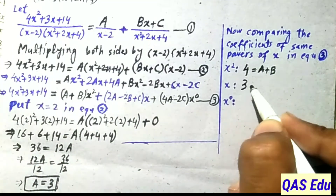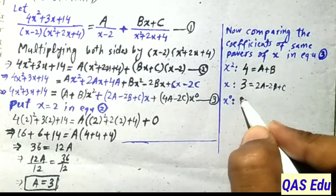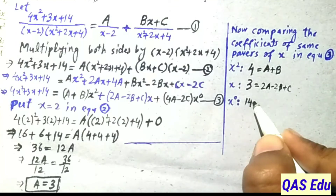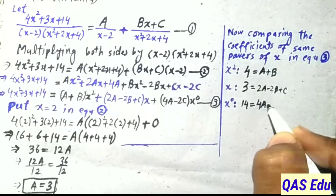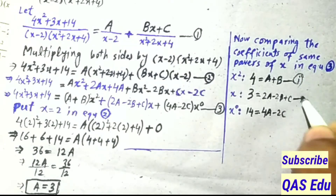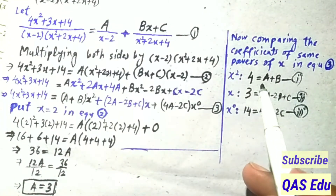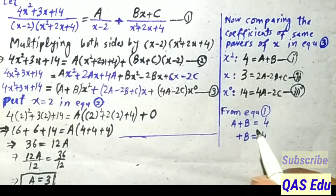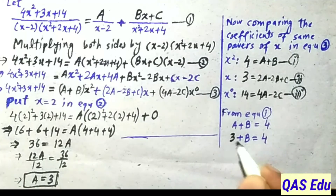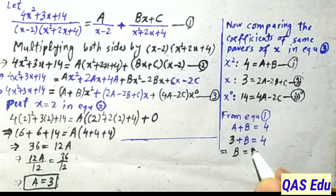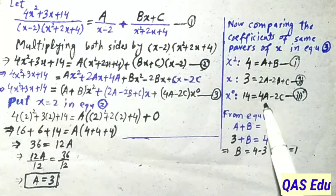Comparing x power 0 (constant) coefficients: left side = 14, right side = 4A - 2C. These give us equations. From equation number 1: A + B = 4. Substituting A = 3 gives 3 + B = 4, so B = 4 - 3 = 1.